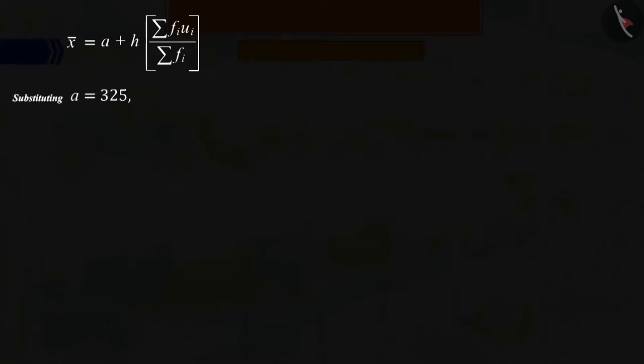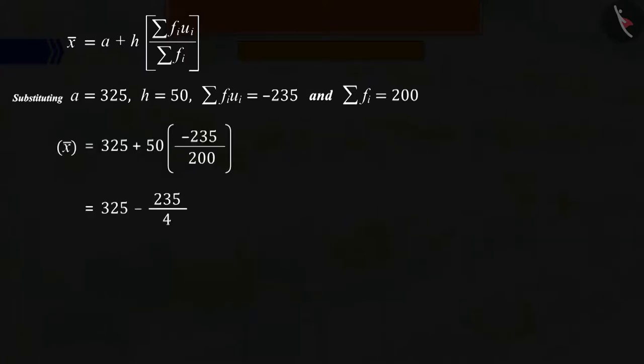By substituting the values of the assumed mean a, class size h, summation fiui and summation fi, and solving, we get x equals 266.25.